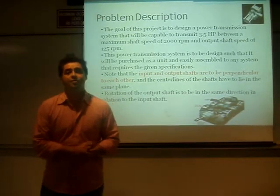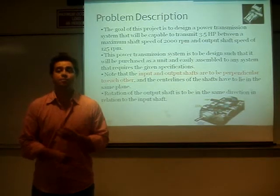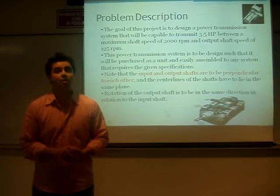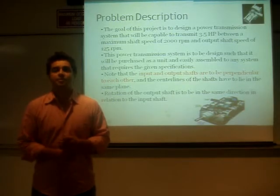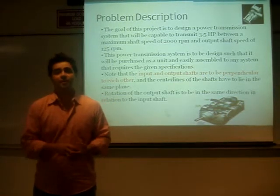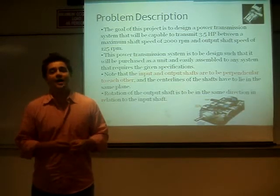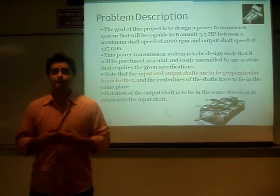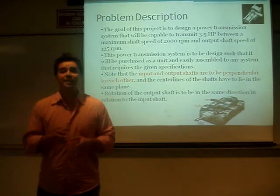Our main goal for this project is to design a transmission system capable of transmitting 3.5 horsepower between a maximum shaft speed of 2000 RPM and an output shaft speed of 125 RPM. This power transmission system is to be designed such that it will be purchased as a single unit, easy to assemble, to any system that would require these specified specifications. Note that the input and output shafts in our design must be perpendicular to each other, meaning that the centerline must lie in the same plane.